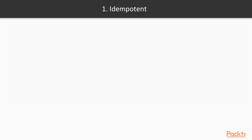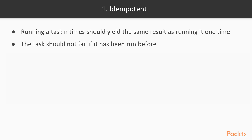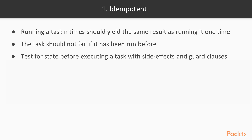The first characteristic of a good automation script is that it is idempotent. So what does that mean? For our purposes, it means that running a task any number of times should give the same result as running it once. In other words, the task should not fail or change the outcome if it has been run before. One way to code this is to test the state before executing a task that has any side effects in the system. You might call them guard clauses.